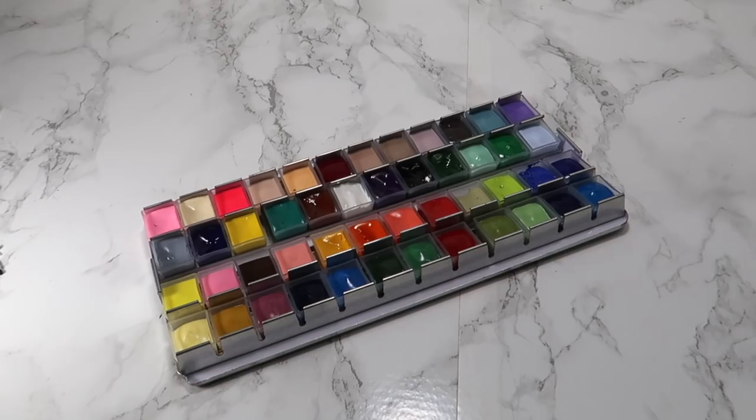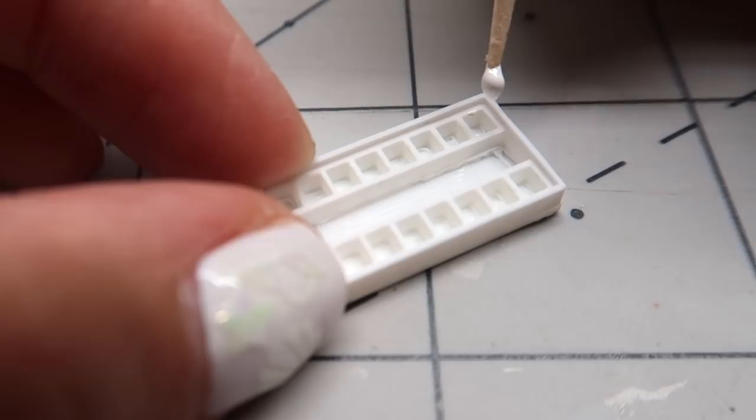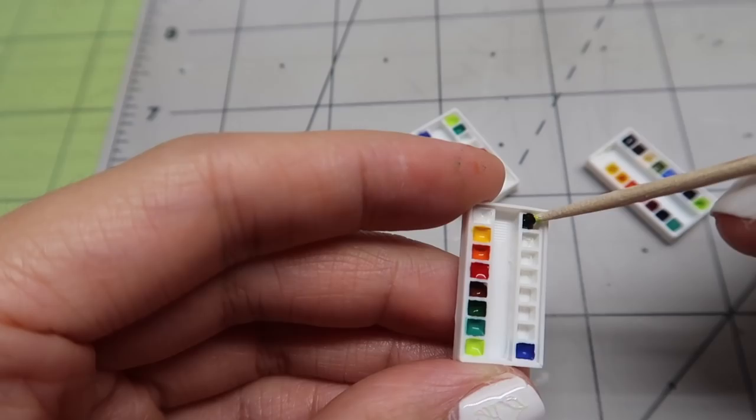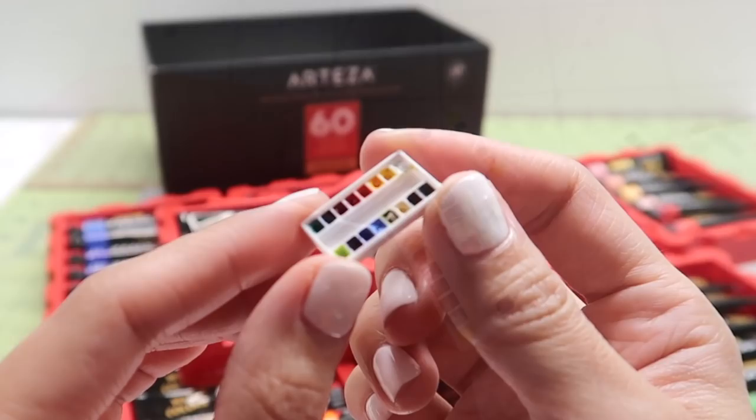Snap the pans back into the palette and close it up. Now you can take this palette with you anywhere. To fill the miniature palette, I use a toothpick to put a small drop into each compartment. I love how these colors bring this palette to life. It's so vibrant and beautiful.